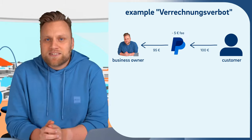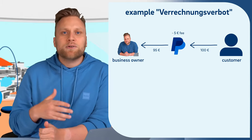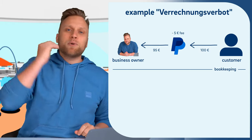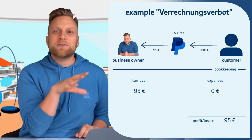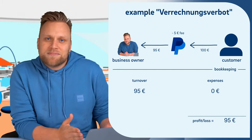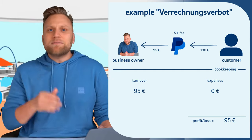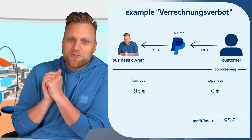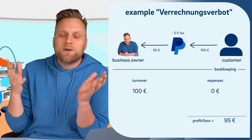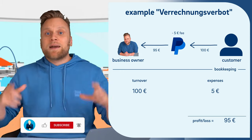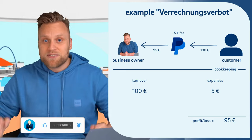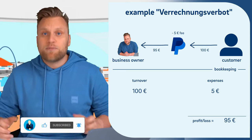It is completely normal for a platform to take a certain fee. What would be wrong in this scenario is if you simply recorded the net amount — meaning the amount after the fees — as revenue, which is $95. That is incorrect. The correct way would be to record the total invoice amount of $100 and then record the $5 fees as expenses. Then you have $100 in revenue minus $5 in costs, resulting in $95 for this transaction.